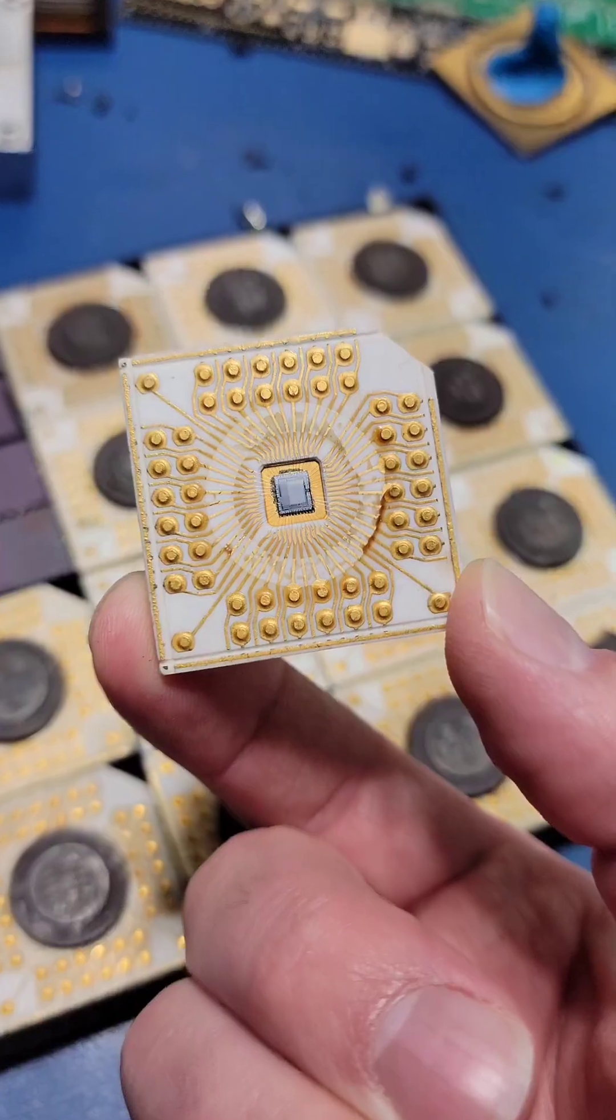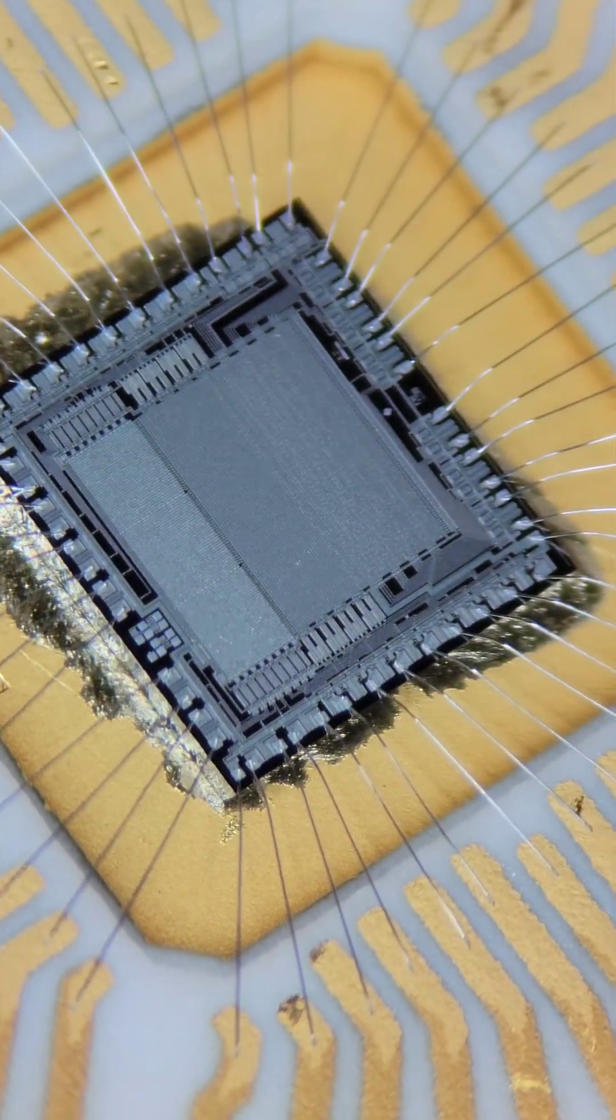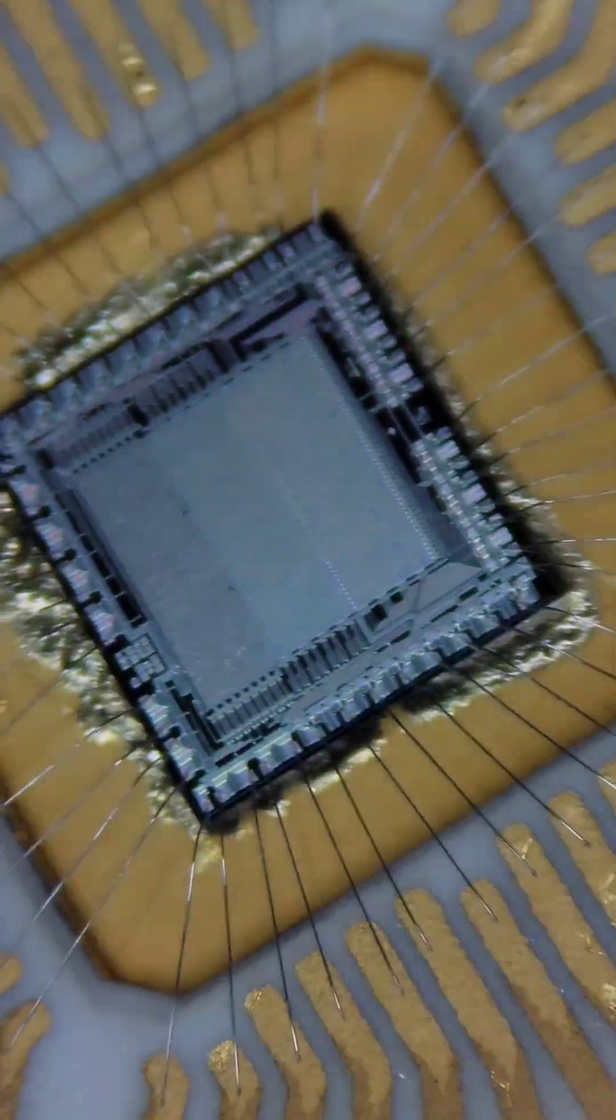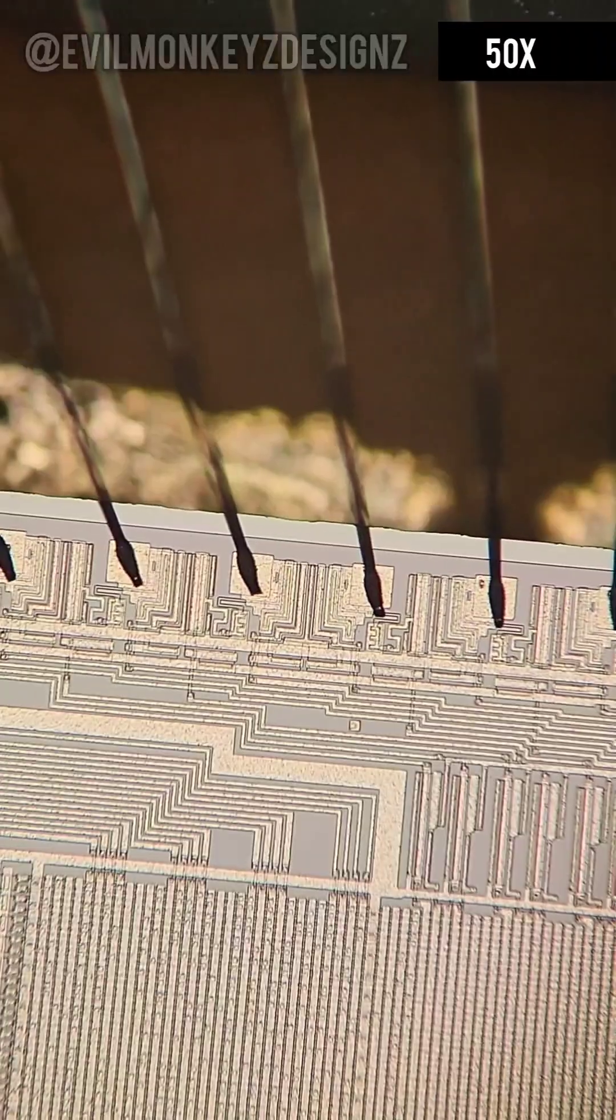With the lid removed, the silicon chip inside can be easily viewed with a microscope. There's limited information on these parts, but the consensus is that they are custom ROMs, which stands for Read Only Memory.